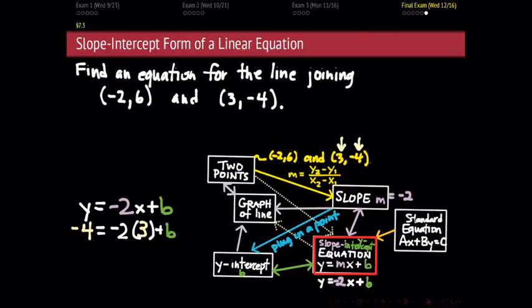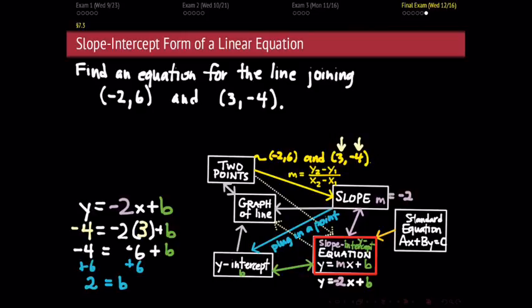How do I solve for b? Add 6 to both sides. When I add 6 to both sides, I find that b equals negative 4 plus 6, which is 2. So according to this work, the y-intercept of this line is 2.